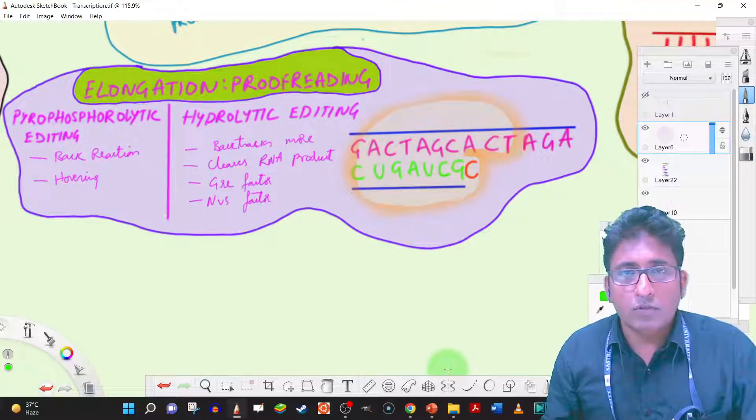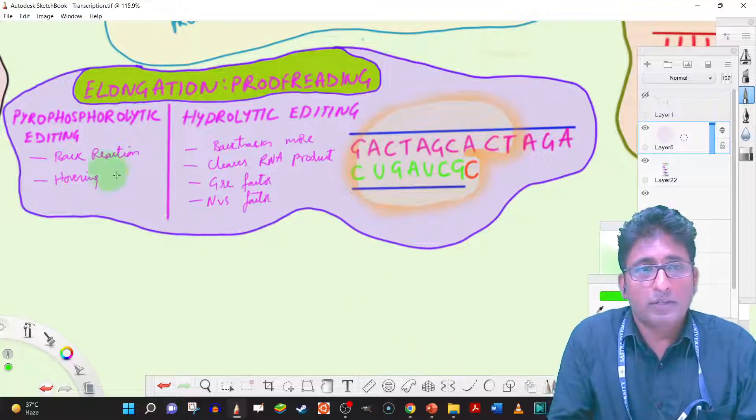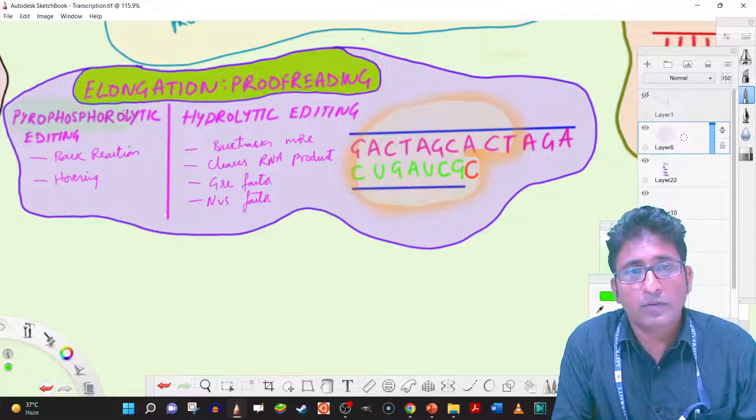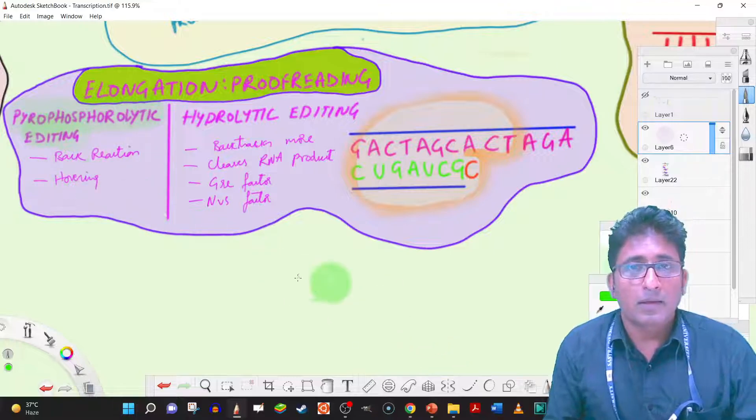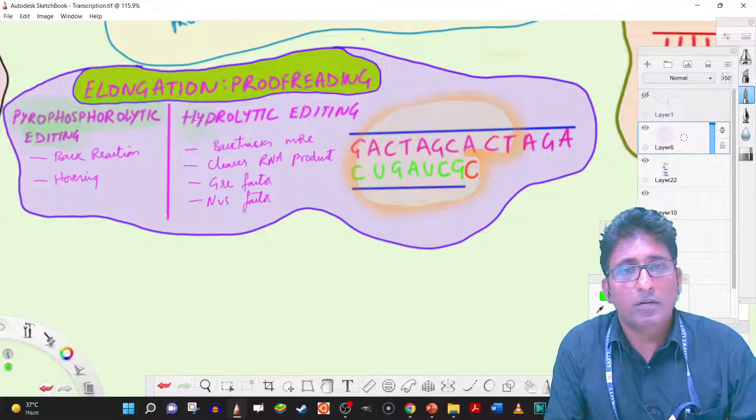And there are two types of proofreading mechanisms that are present. One of it is called as pyrophosphorylytic editing, and the second one is called as hydrolytic editing.